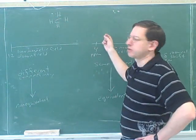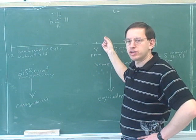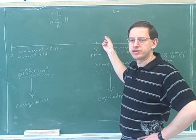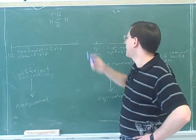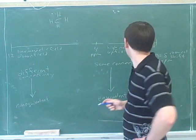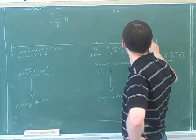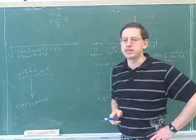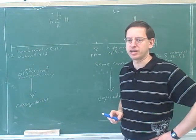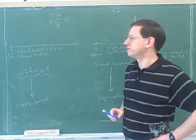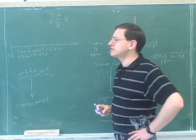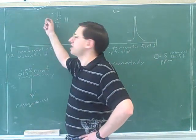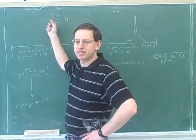How many peaks are we going to get on our printout? Just one peak. All of these hydrogens will show up as the same peak, so we'd simply get a single peak in our printout. Those are all equivalent — that's the simplest case. Notice that the number of peaks is not the same as the number of hydrogens.